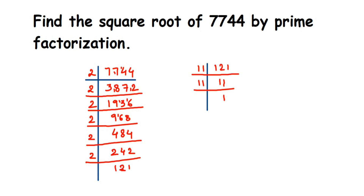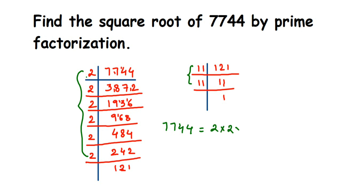For any number, if the given number is a perfect square, we can easily find the square root. We just need to pair the prime factors. Let me rewrite this: 7744 equals all the factors we found. Counting the twos, we got 1, 2, 3, 4, 5, 6 — six 2s. So it's 2×2×2×2×2×2, and then we also have 11×11.